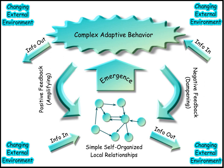Complex systems operate under far from equilibrium conditions — there has to be a constant flow of energy to maintain the organization of the system. Complex systems have a history; they evolve and their past is co-responsible for their present behavior. Elements in the system may be ignorant of the behavior of the system as a whole, responding only to the information or physical stimuli available to them locally.